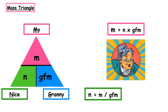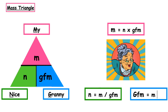If you wanted to work out the GFM, you would cover up the GFM in the triangle and we can see that m is over n, so the formula is GFM = mass ÷ number of moles. Remember, if they give you the formula for a particular compound you can work out the GFM by using the relative atomic mass of the elements in the data booklet. These are usually only given in multiple choice past paper questions.